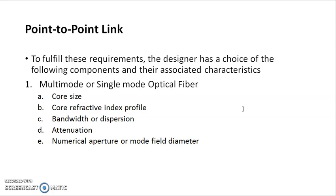The basic requirements for link design — a fiber optic link — involve three components: fiber, source, and detector. For the optical fiber, whether it operates in single mode or multimode, the core size and core refractive index profile are the most important parameters, as they define the numerical aperture. The numerical aperture determines the optical power launched from the source into the fiber. Also important are the operating bandwidth, dispersion, total attenuation for the given length, and the numerical aperture.